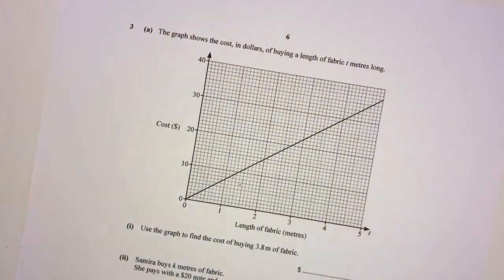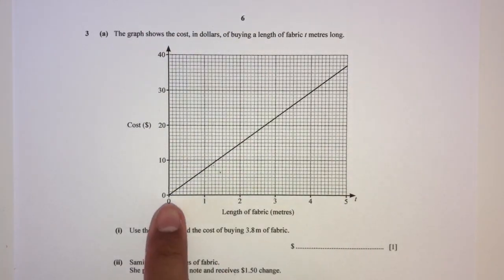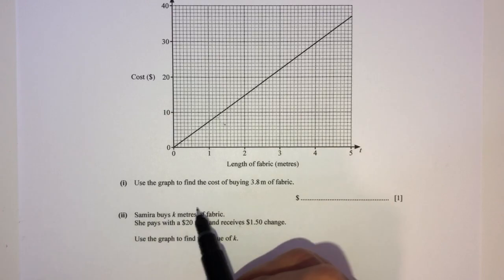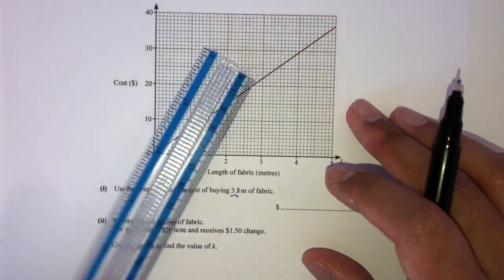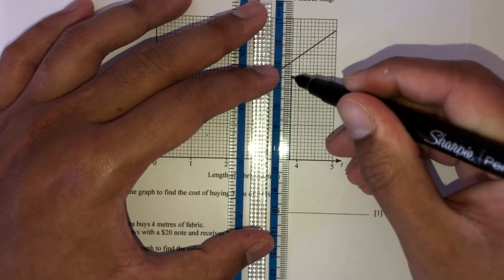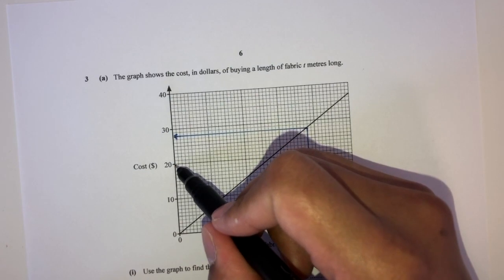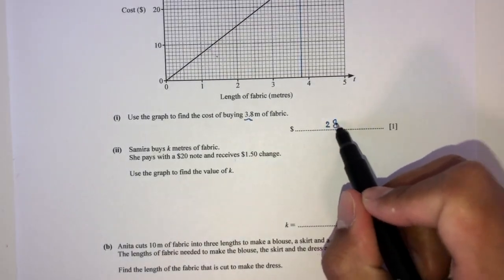Now question number three. The graph shows the cost in dollars of buying fabric t meters long. As length increases, cost increases — it is directly proportional. Part one: use the graph to find the cost of 3.8 meters of fabric. Locating 3.8 on the x-axis and reading the corresponding y-value gives $28 as the cost of 3.8 meters of fabric.